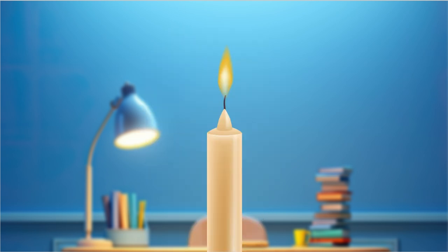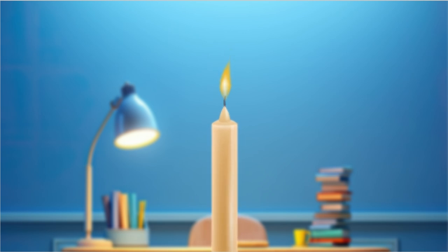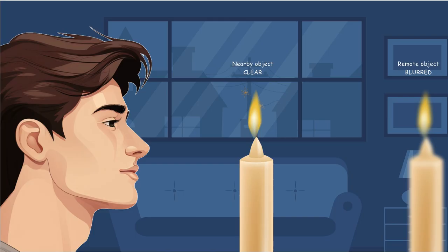Look at this candle. When it is close to my eyes, I can see it clearly. Now, as it is moved away, it becomes less clear. This means I can see nearby objects clearly, but not distant ones. This condition is called myopia.